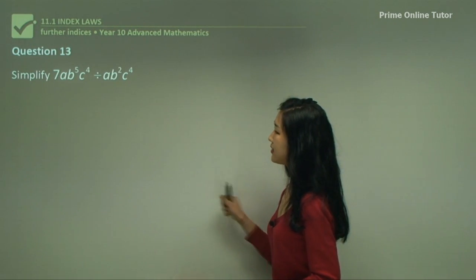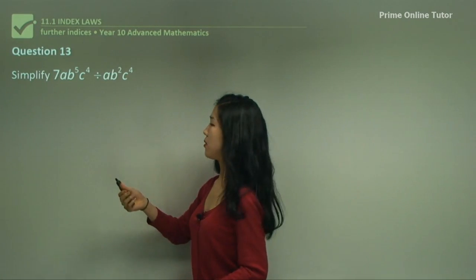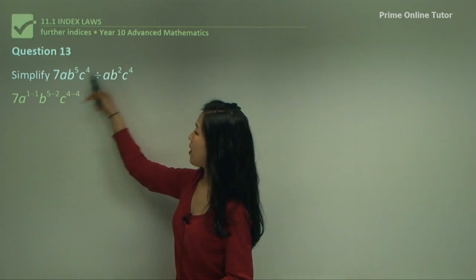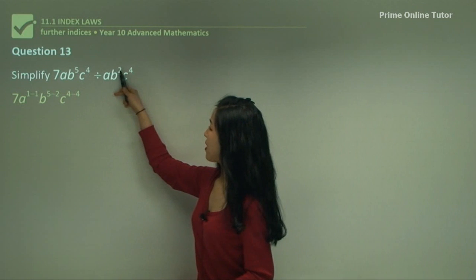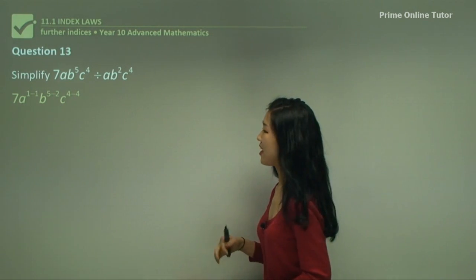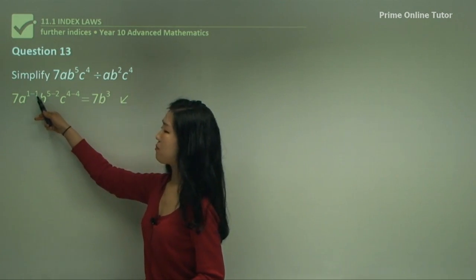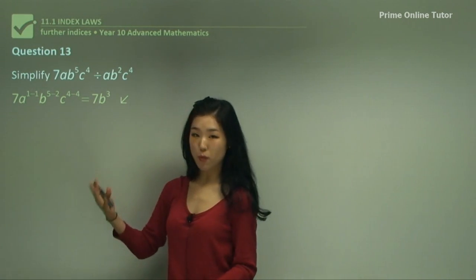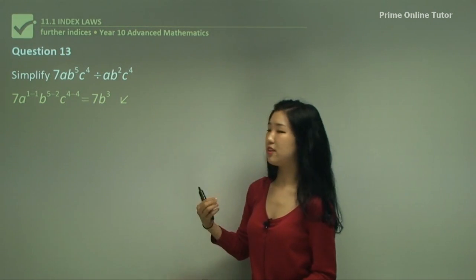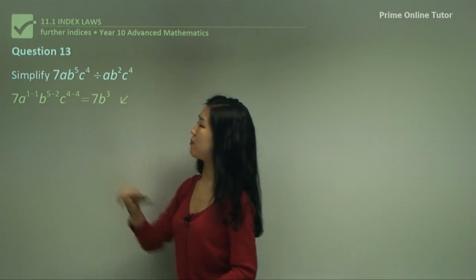Question thirteen. It's this one divided by this one. The coefficient of the numerator is just 1, so we leave the coefficient of 7. We put the a's together: a to the power of 1 minus 1. Then b to the power of 5 minus 2. And c to the power of 4 minus 4. Simplifying: a has a power of 0 so it becomes 1, and c to the power of 0 also becomes 1. So we're only left with 7b cubed — the c and a are eliminated.